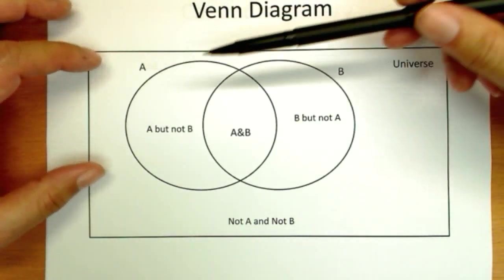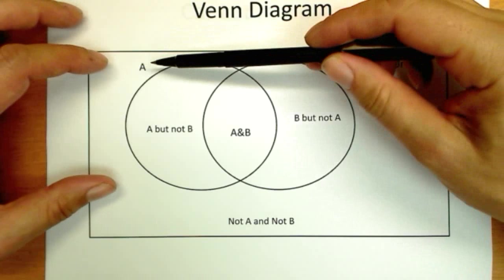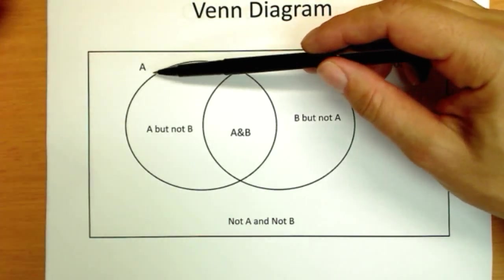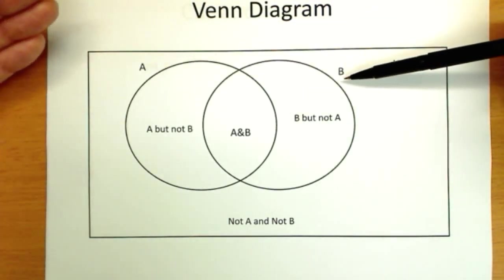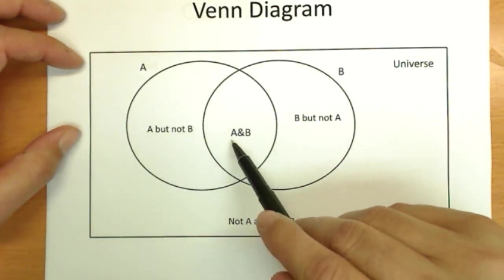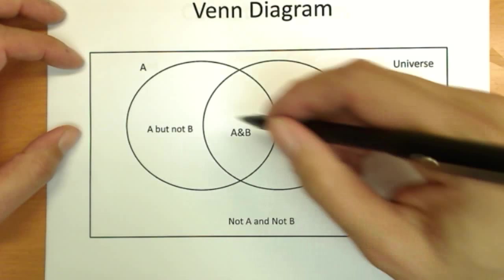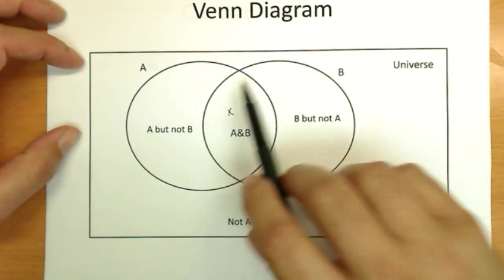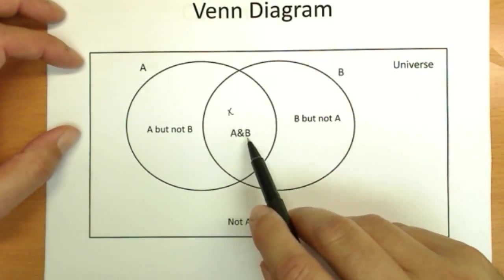And then in this case we have two categories. Now everything inside of a circle has the properties of category, in this case A, and over here category B. So we can organize our data into this type of a situation. So here in the middle, this group of elements in here, any X's that are in here, are inside of both circles, so they have properties A and B.